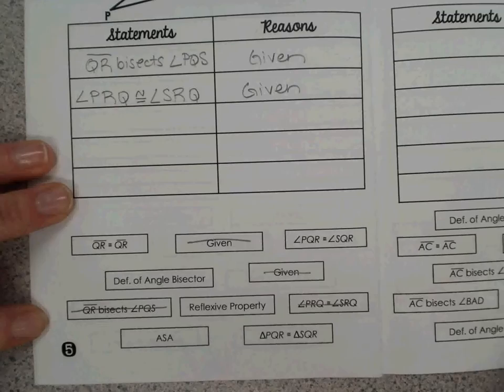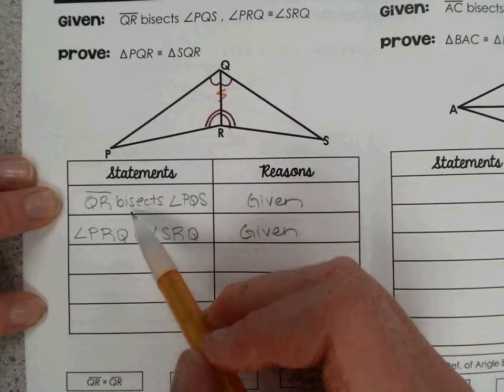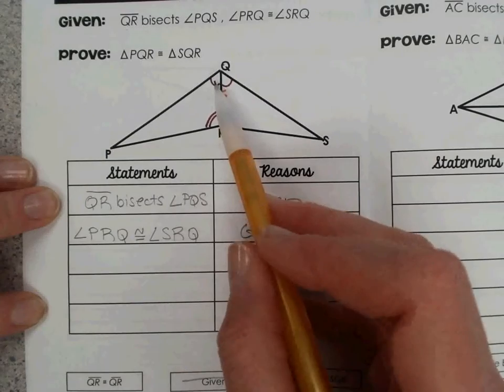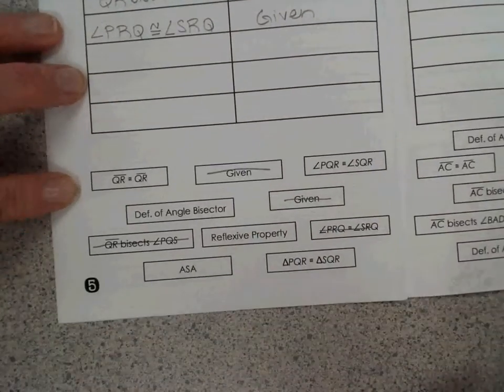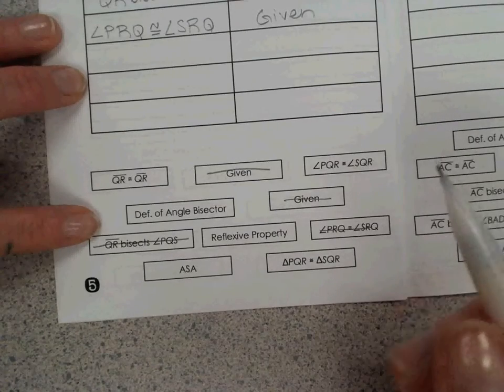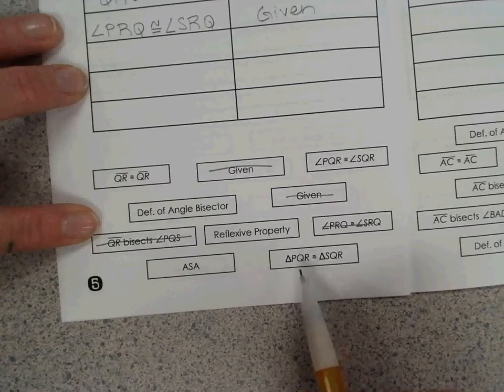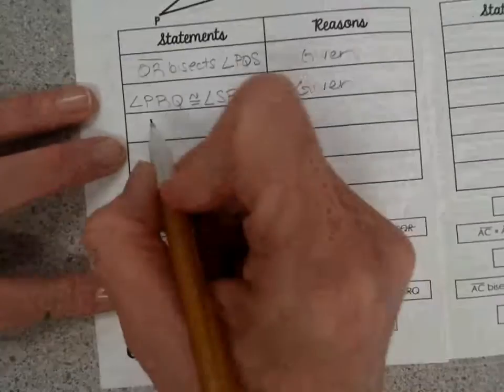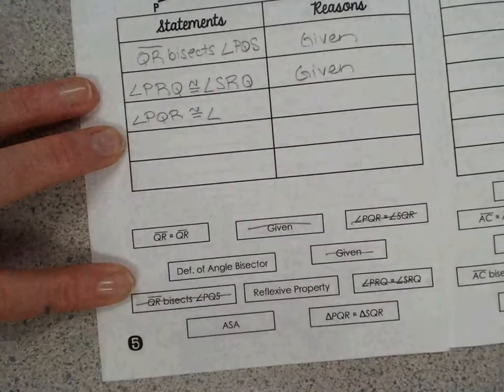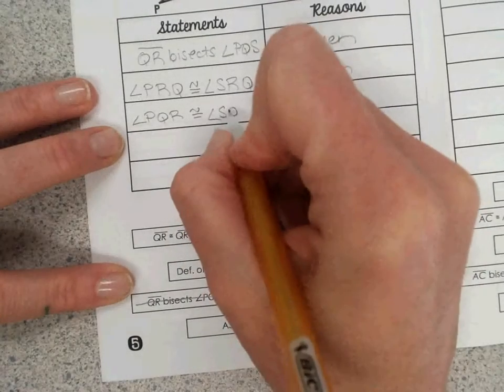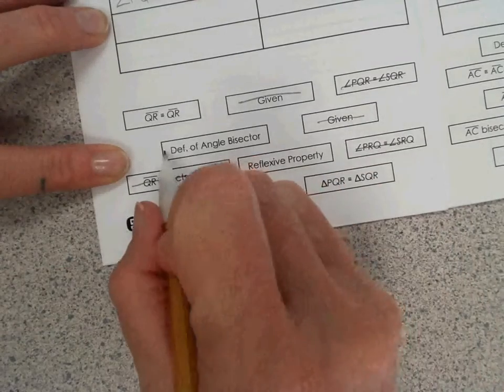And then, just like we marked in the diagram, bisects means it cuts the angle into two congruent angles. So let's go ahead and use that as our next statement, that these two angles, PQR is congruent to angle SQR. And that would be the definition of angle bisector.